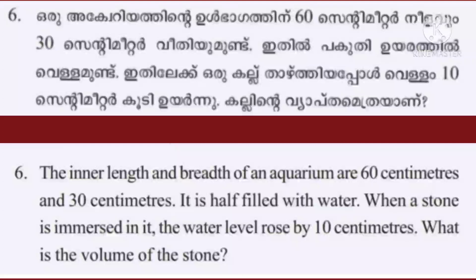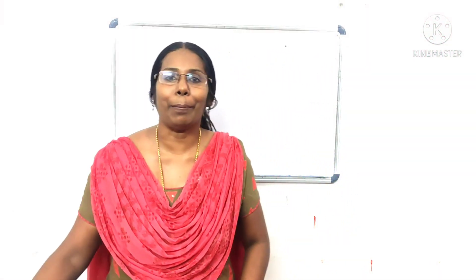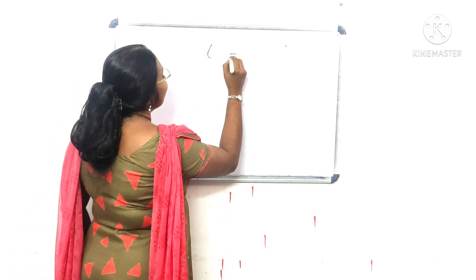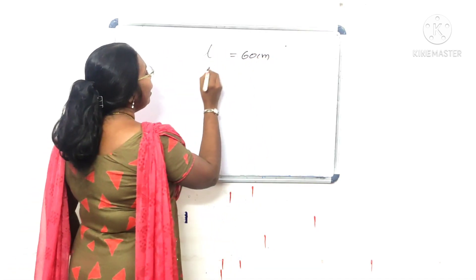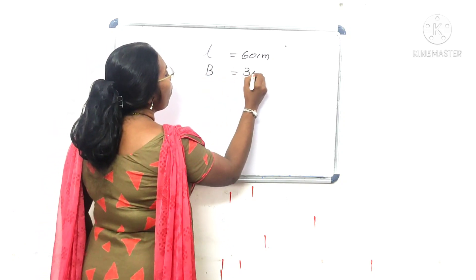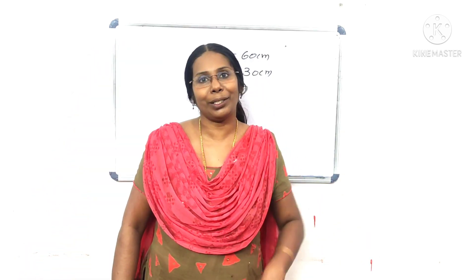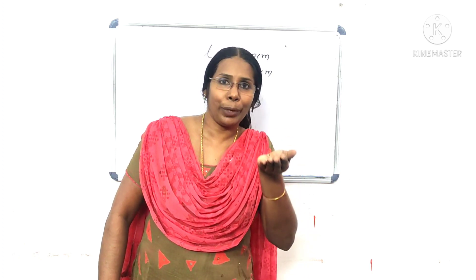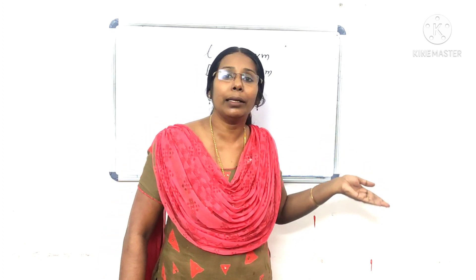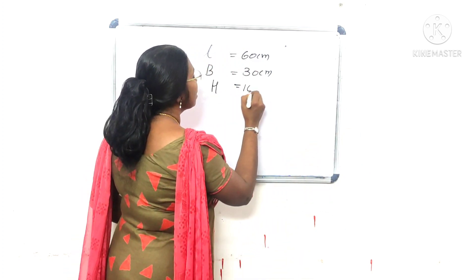The inner length and breadth of an aquarium are 60 centimetres and 30 centimetres. It's half filled with water. When a stone is immersed in it, the water level grows by 10 centimetres. What is the volume of the stone? The length is 60 centimetres, the breadth is 30 centimetres, and the rise is 10 centimetres.